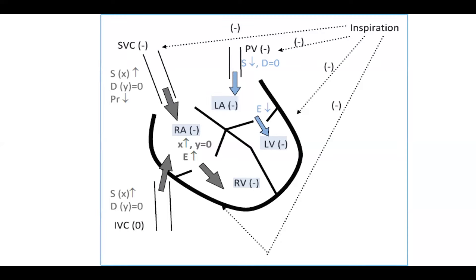That respiratory discordance between RV and LV flow — one manifestation on physical exam is pulsus paradoxus, which is far more common in tamponade, almost universal. It's relatively less common in constrictive pericarditis, only about a third of patients. To get it on exam you need more pronounced discordance. So tamponade actually has even more pronounced RV-LV discordance than constrictive pericarditis.